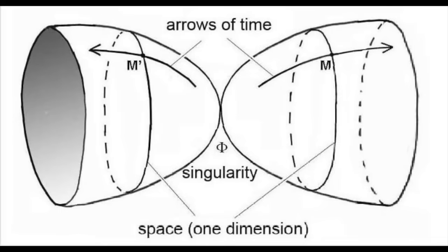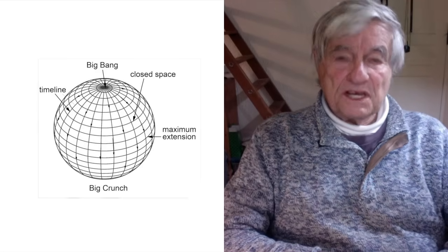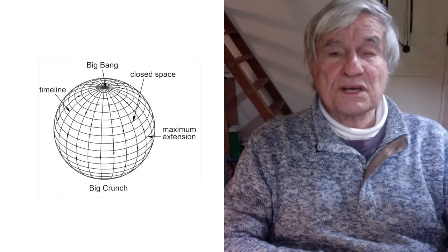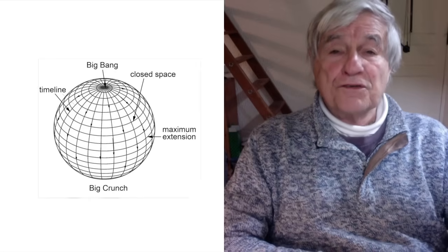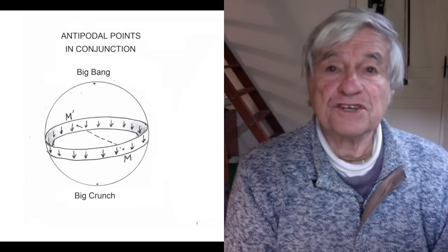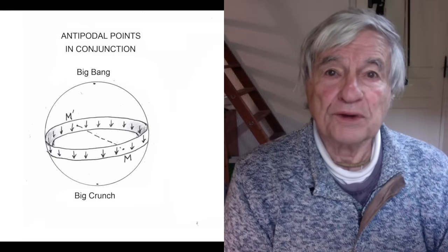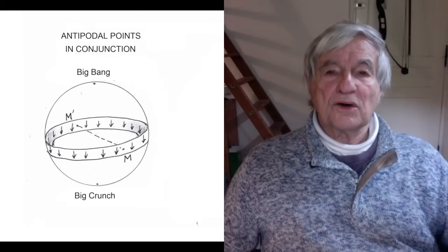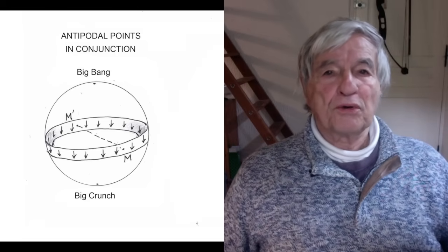Such a miracle could exist! Let's go back to this closed universe. The Equator of the sphere represents the maximum extension of the universe, and the vicinity of this Equator represents the vicinity of space-time in such conditions. Now we isolate this vicinity of this maximum extension of space-time — we have a sort of belt with the arrows of time. Now we are going to put into conjunction all couples of antipodal points of that belt.